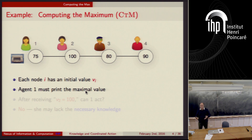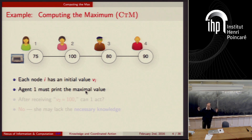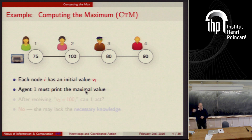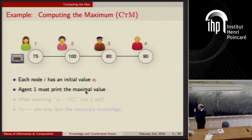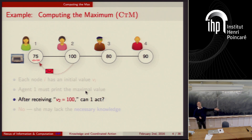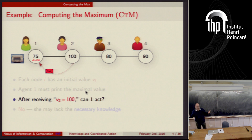I'm going to look at a very simple problem that I call computing the maximum. We have a network and every node starts out with some initial value and we want to compute the maximum. I want process one, in this case Alice, the green figure on the left, to print one value — this value has to be the maximum. In this scenario, suppose Beverly, number two, sends number one a message saying her value is 100. So now Alice has the maximum value. The question is, can she now print it?